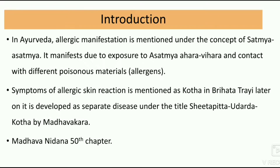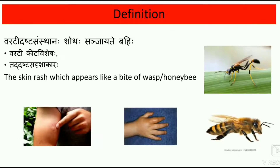It is explained in detail in Madhavak Nidana, i.e. the 50th chapter. Definition: 'Varati Dashta Samsthanah Shota Sanjayati Bahi' — which means the skin rash which appears like a bite of a wasp or a honey bee is known as Attikirya.